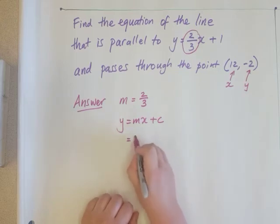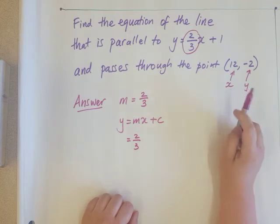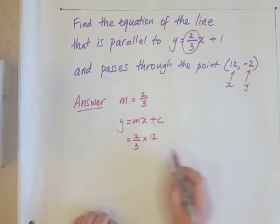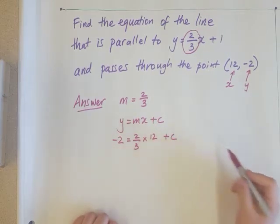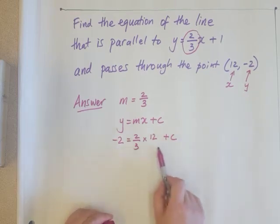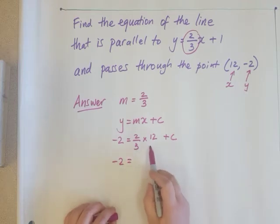So I will write 2 thirds where m is. I know that x is 12 and I know that y is negative 2. All that's left is to work out what is this value of c. Let's do this calculation here.